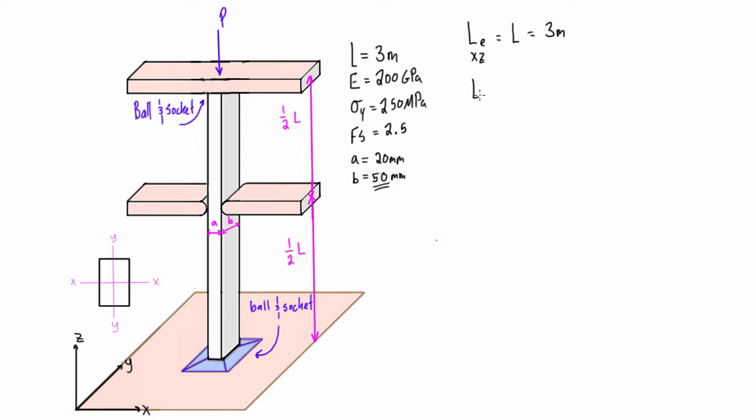Now if we look at the effective length for buckling in the YZ axis, it is impeded here. It can't just go out like that. It's going to hit that bracing and stop. So what we really do is if we were to see buckling in this axis it would be something like that.